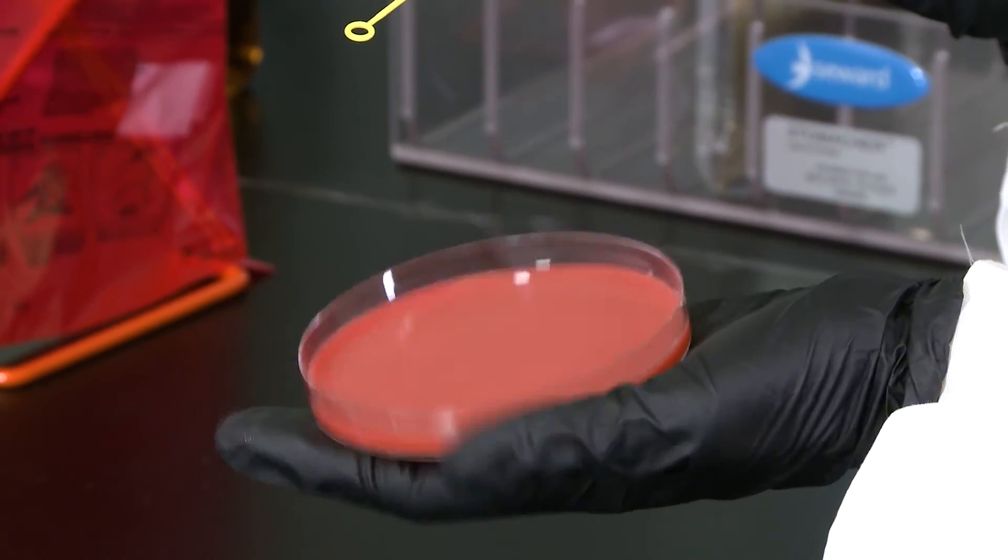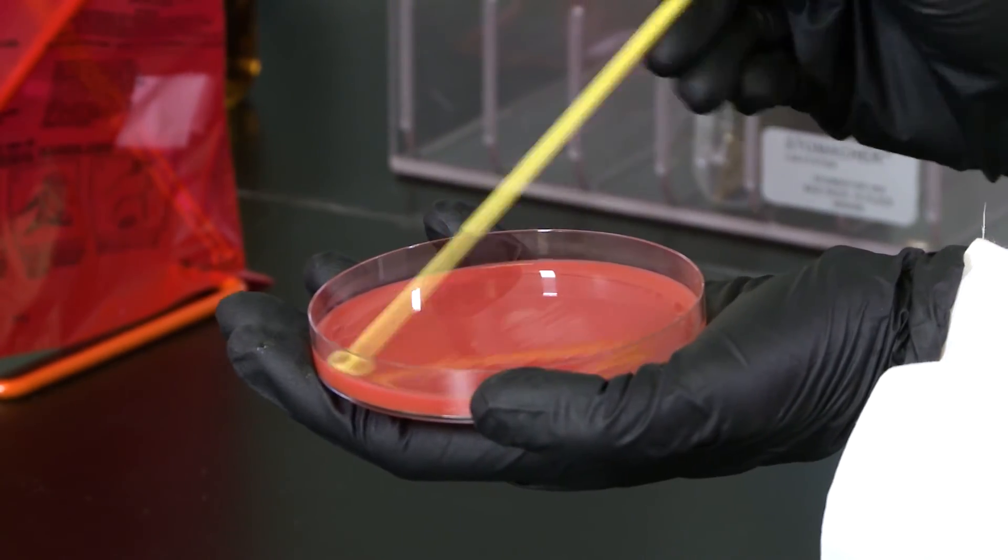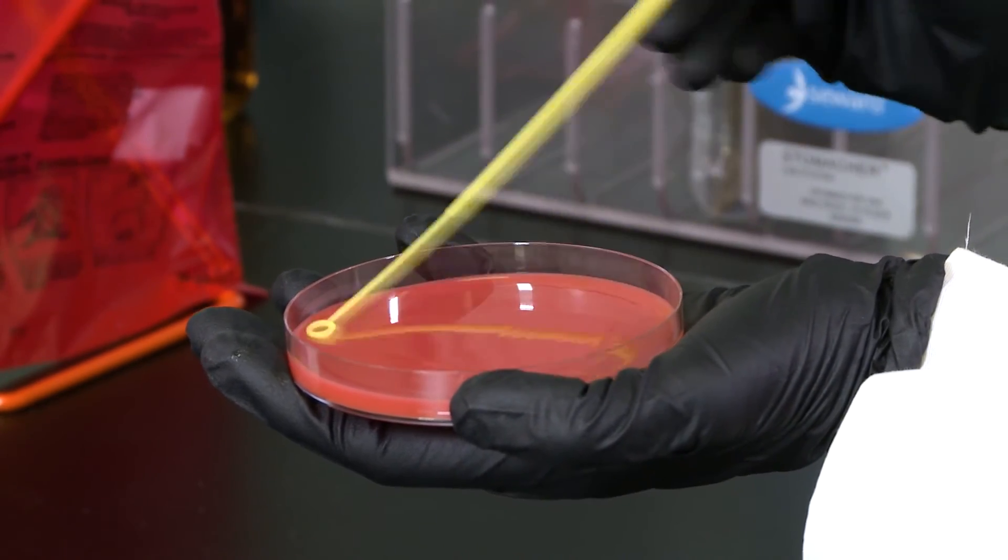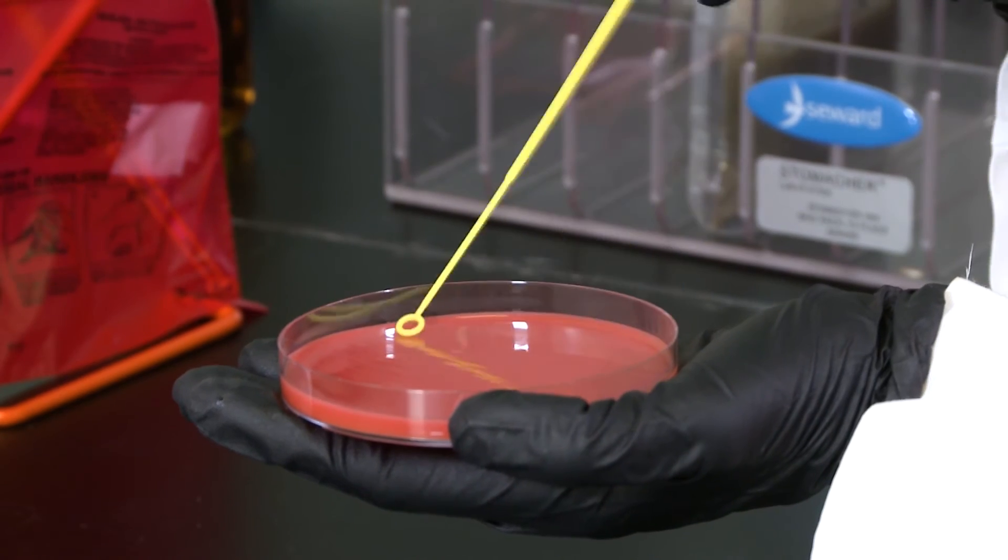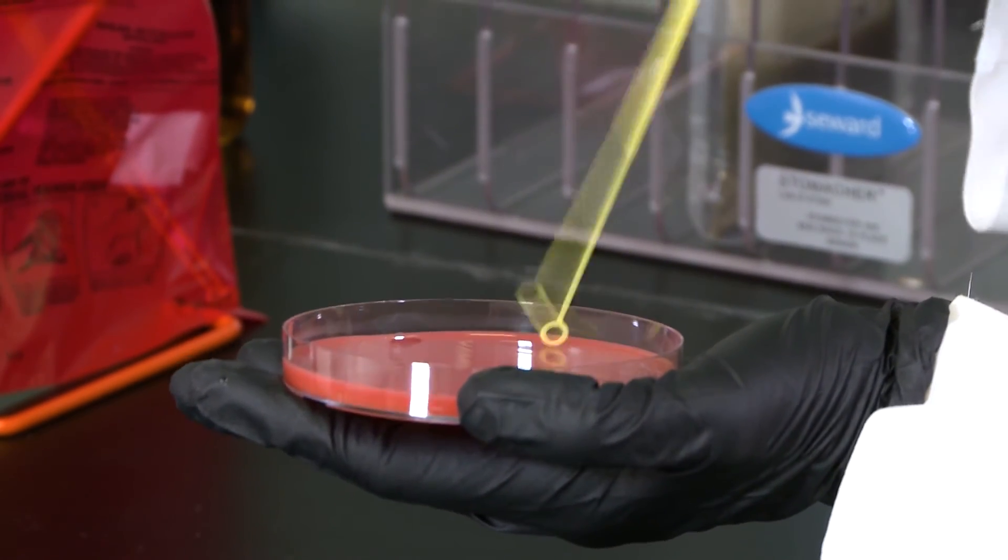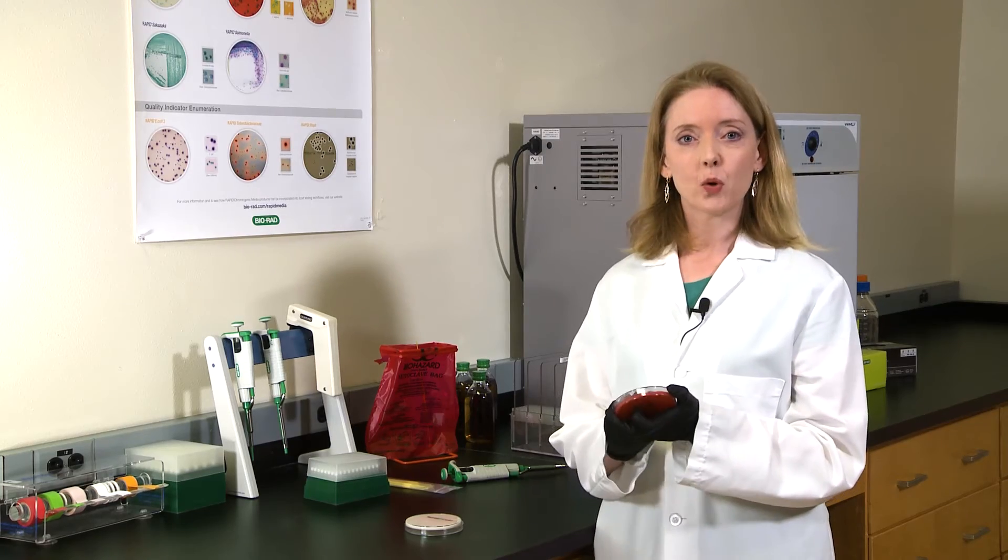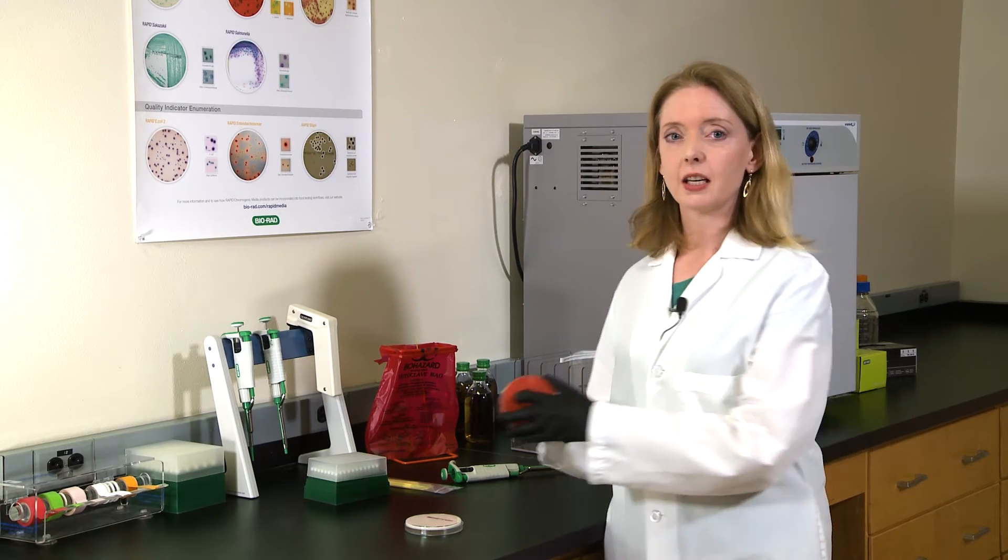Turn the plate one quarter turn and streak across the other half of the agar surface in relatively tight streaks over the whole dish from the edge of the previous spread. It's very important to obtain well isolated colonies for further confirmation.